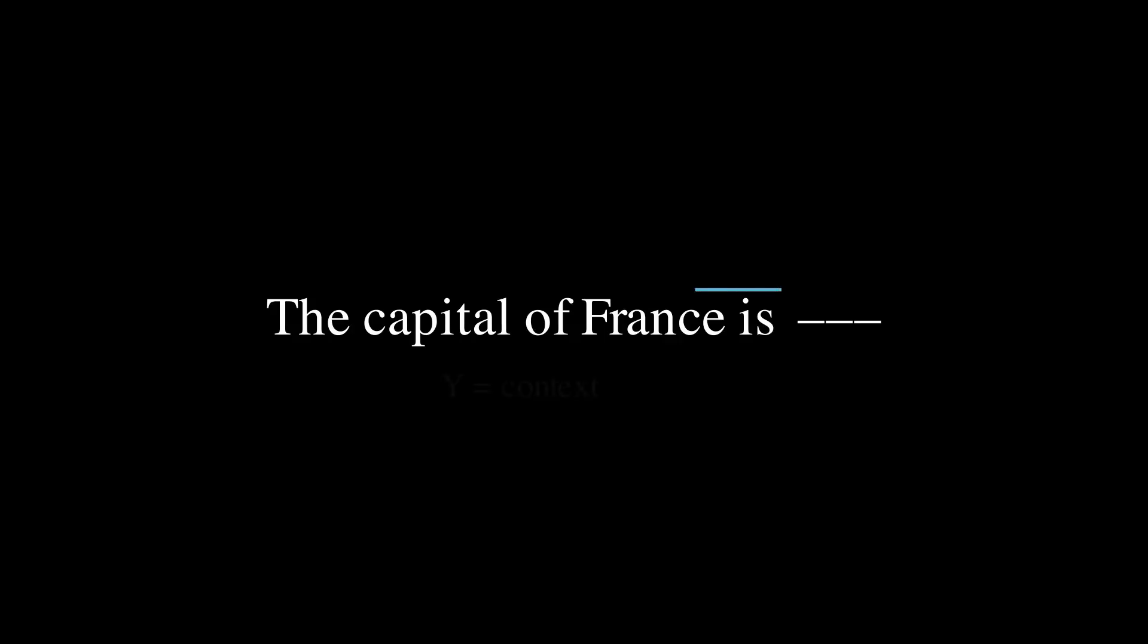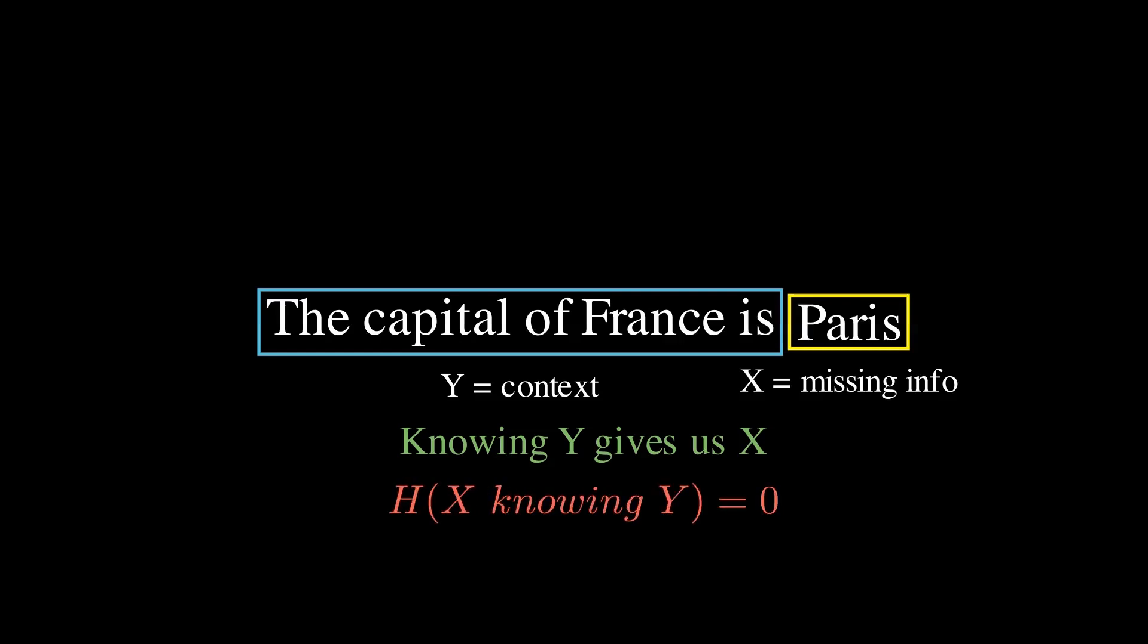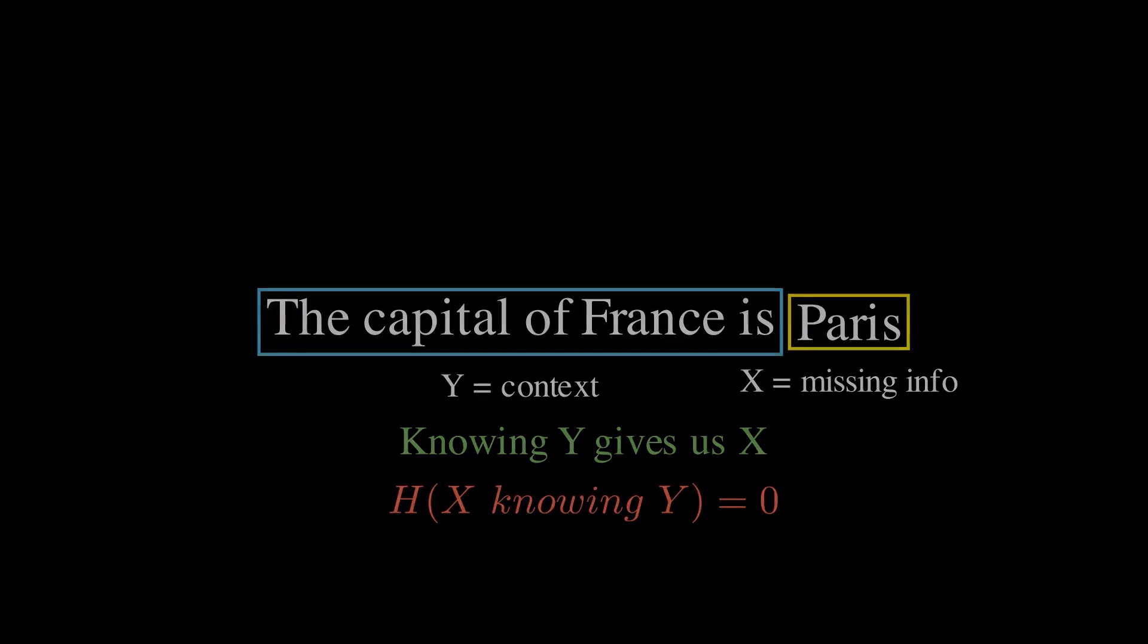Let's take an example. Suppose you get a text that says the capital of France is, let's call the beginning of the sentence y, the context. You can probably already guess the missing information given the context. We call that missing information x. So knowing y, you don't need to ask any more questions to know x. So the entropy of x knowing y is zero. Now, you might be saying that the word Paris contains information. How come its entropy is zero?